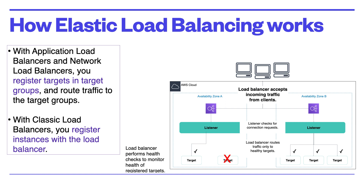You can also configure your load balancer to perform health checks, which are used to monitor the health of registered targets so that the load balancer only sends requests to healthy instances. When the load balancer detects an unhealthy target, it stops routing traffic to that target and then resumes routing traffic to healthy targets. With application load balancer and network load balancer, you register targets in target groups and route traffic to those target groups. With the classic load balancer, you register instances directly with the load balancer.